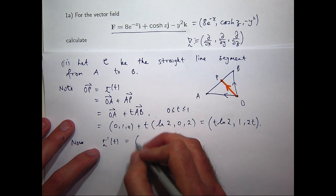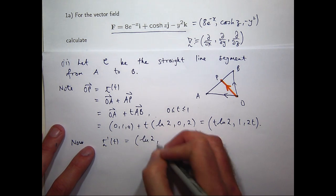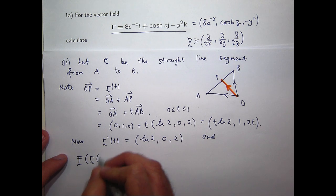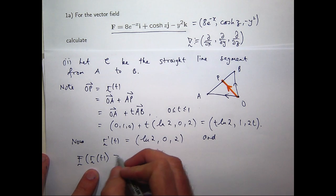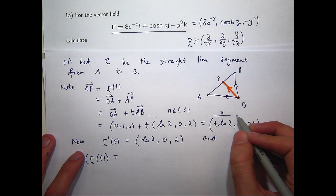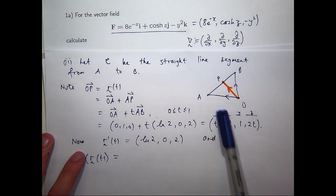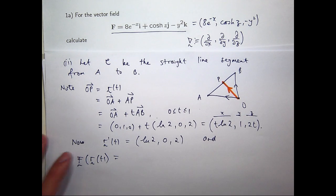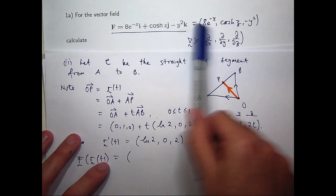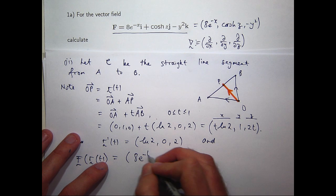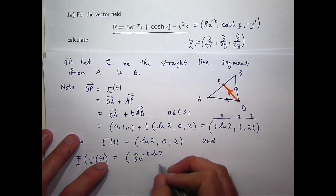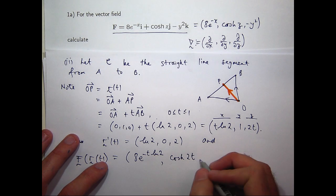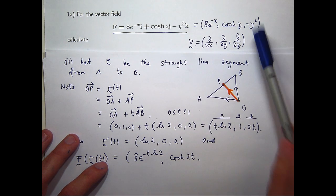So let's differentiate these in a component-wise fashion. So I'm going to get log 2, 0, and 2. And the vector field, F evaluated along our parametrization. Well, think of this as x component, this as the y component, and this as the z component. Just replace x with t log 2 in here, y with 1 in here, and z with 2t in here. So we're going to get something like the following. I'm going to write it as a triple in here. So we're going to get 8e to the minus t log 2. Cosh z, so I'll replace z with 2t. Cosh 2t. And I'll replace y with 1, so I'm going to get minus 1.